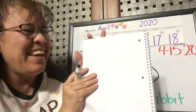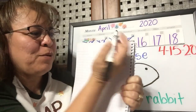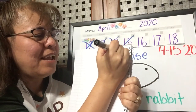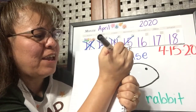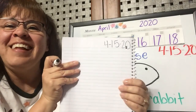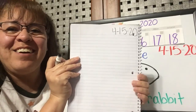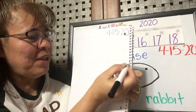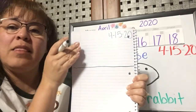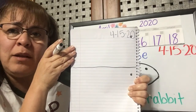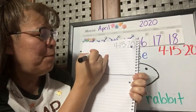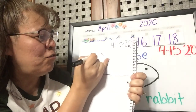Alright, so in your journal, I'm going to use the marker because sometimes my pen is hard to see. Remember, we always put our date at the top of our notebook. Today is the 15th of April, 2020. And when we set up our writing page, we make a line all the way across — the top half is for our drawing and the bottom half is for our writing.